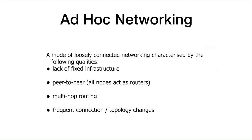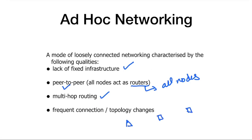Ad hoc networking is a mode of loosely connected networking characterized by: lack of fixed infrastructure, peer-to-peer connectivity where all nodes are access routers. One of the challenging things is that all nodes can act as a router. Multi-hop routing is another key feature — for example, if this is the source node and this is the destination node, the packet has to be sent between them.